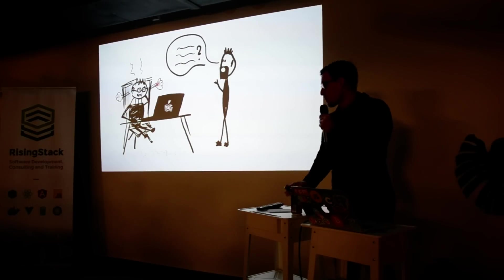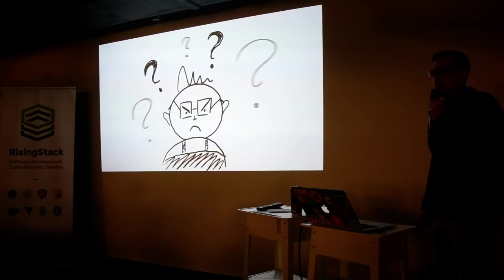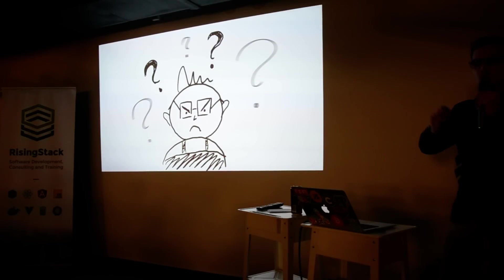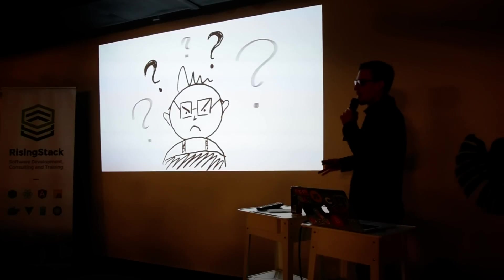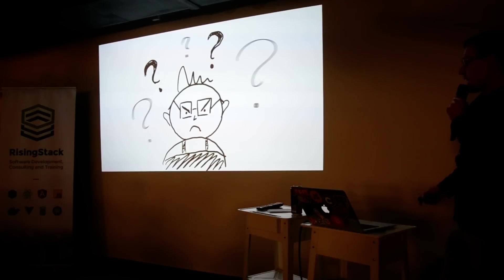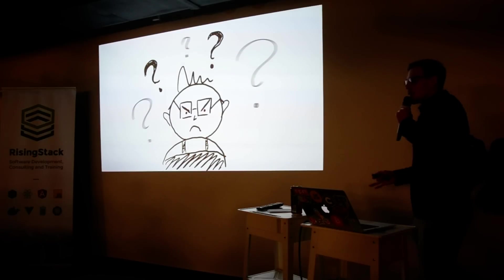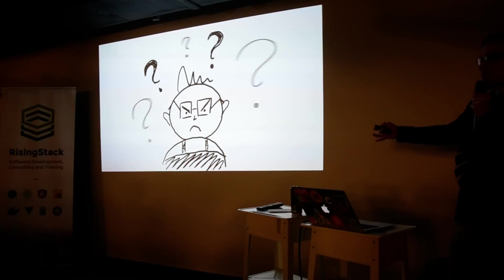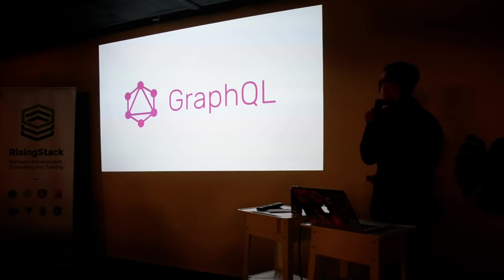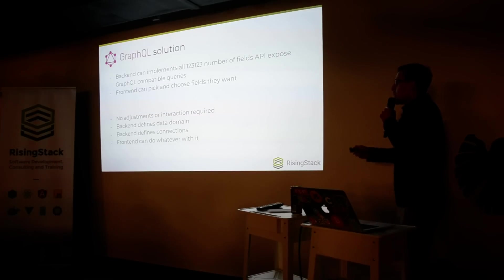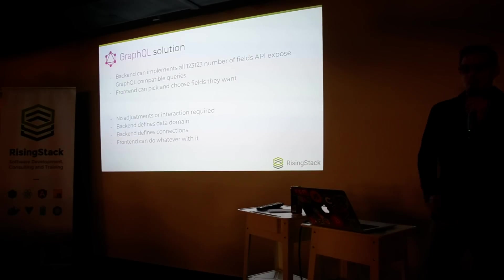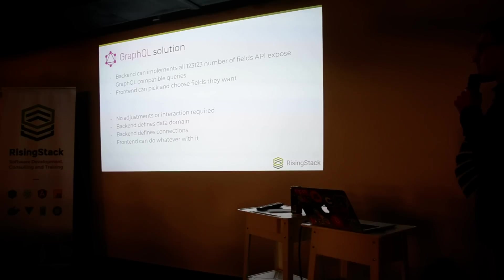After some time, Bela gets upset and thinks: there must be a better way to do this. I don't want to add all these fields one by one. How about I could just define the whole schema, all the relations at once, and then the frontend can just pick and choose? There is a tool for that, and this tool is called GraphQL. GraphQL allows the backend to implement all the fields on the API, and the frontend can just pick and choose what they want.